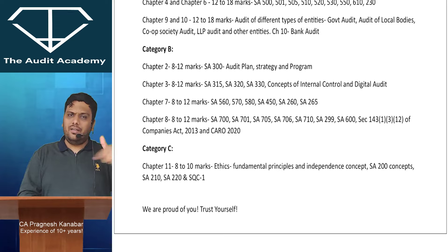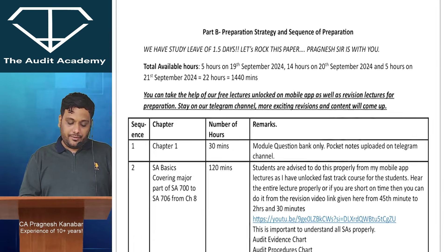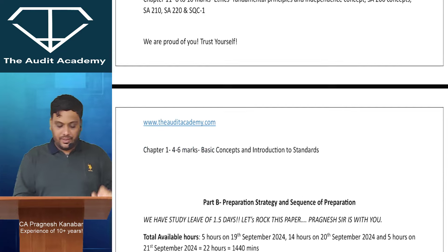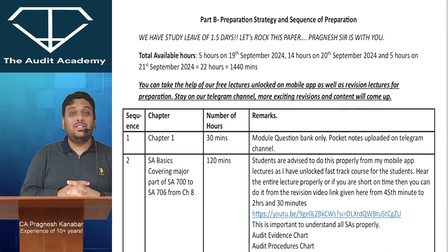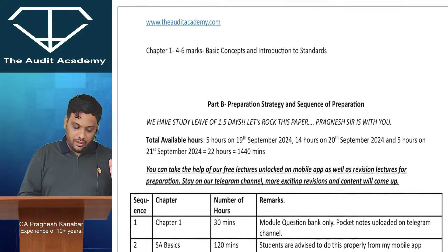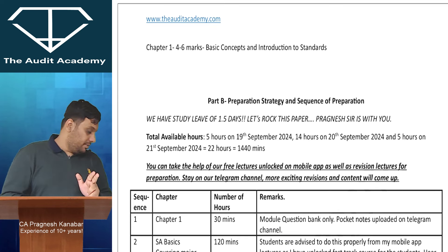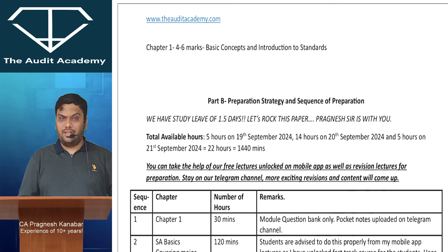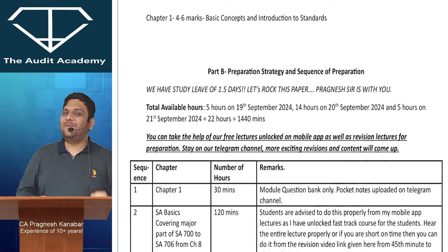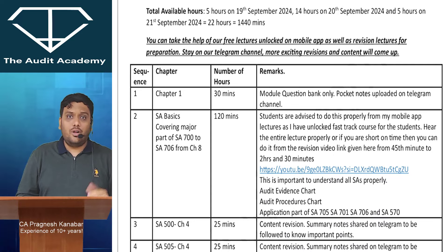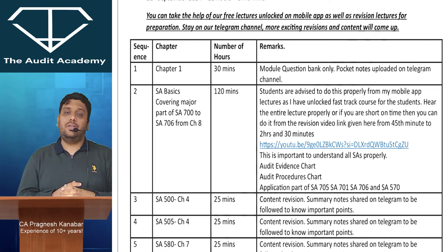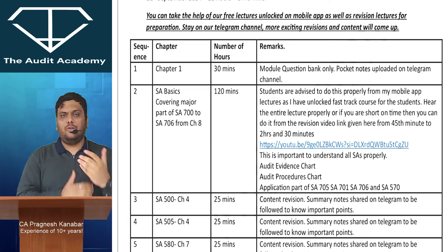Category C: quick revision only. No need to do the entire question bank. You can just do module questions - no notes, no concept, nothing, only module questions. The entire preparation sequence is given along with time to be allotted. I have calculated 5 hours for the 19th, 14 hours for the 20th because you don't have much leave, and 5 hours on the 21st which is your exam day. You can take help of free lectures, detailed lectures on the app, premium lectures, and short revision lectures on YouTube.